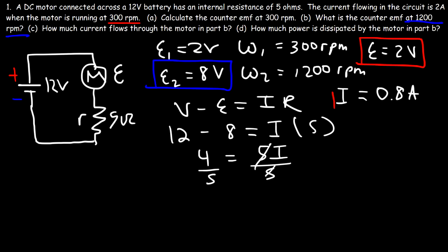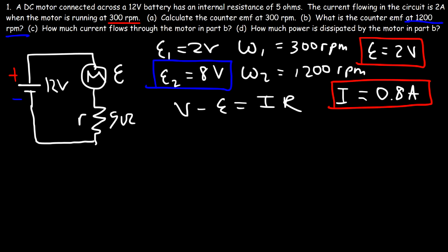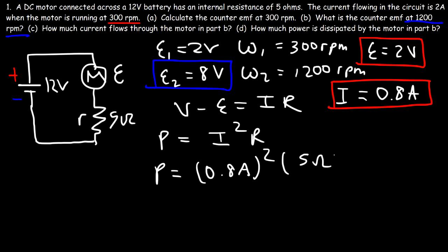Part d: how much power is dissipated by the motor in part b? The power dissipated by the motor is equal to the power dissipated by its internal resistance. Using P equals I squared times r: the current is 0.8 amps and the internal resistance is 5 ohms. So the power dissipated by this motor is 3.2 watts.